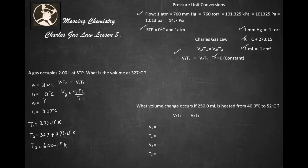And we're looking for V2, so isolate for V2. V2 equals V1 T2 over T1. So V2 equals V1 T2 over T1. So V2 equals of course 2.00 liters times T2, which is 600.15 K, divided by our T1, which is 273.15 K. K's cancel out. V2 is going to equal, let's see here, 600.15 K times 2 divided by 273.15 K, and that's going to give me 4.39 liters.